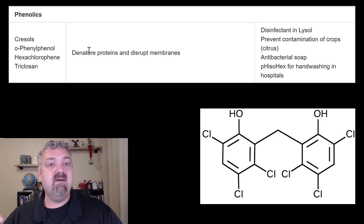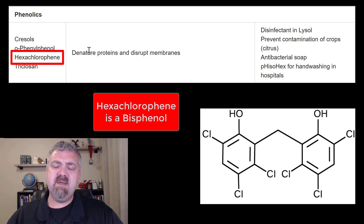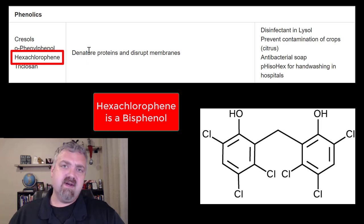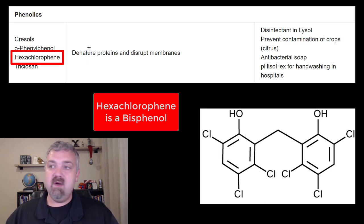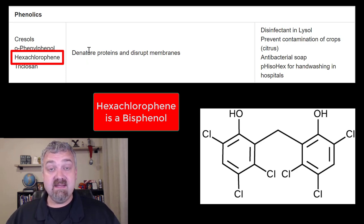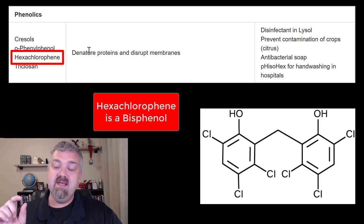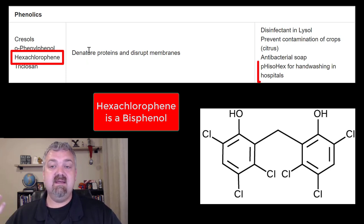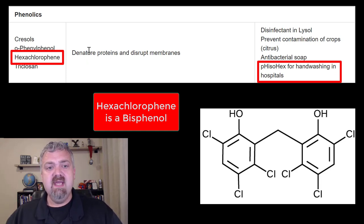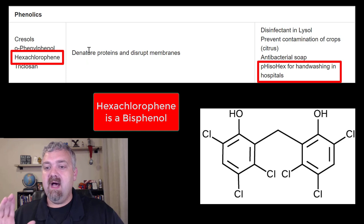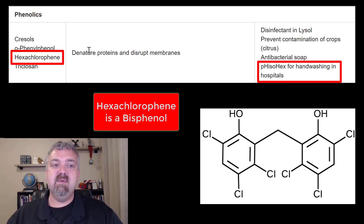The last one in this group is the bisphenol called hexachlorophene. A different compound called chlorhexidine has replaced it in many ways, but hexachlorophene is very good at killing gram-positive bacteria. Anytime you hear of something that kills gram-positive bacteria, think skin organisms — your staph and strep organisms that dominate the skin are gram-positive. Hexachlorophene is used in Fisahex, which is the brand name, and it's used for hand washing. They used to use it in nurseries on baby skin before they realized it was probably toxic.